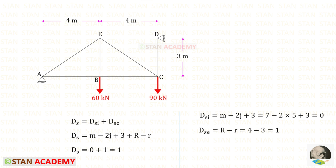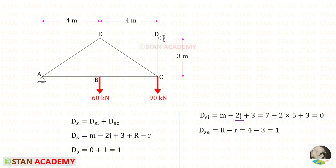Let us find the degree of static indeterminacy, that is DSI plus DSE. To find the internal static indeterminacy, this is the formula. m is the total number of members. Counting the members: 1, 2, 3, 4, 5, 6, 7 — so m is 7. j is the total number of joints: 1, 2, 3, 4, 5 — so j is 5. For the degree of internal static indeterminacy we will get 0.